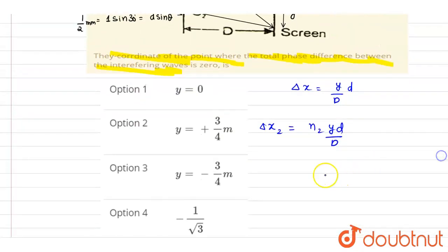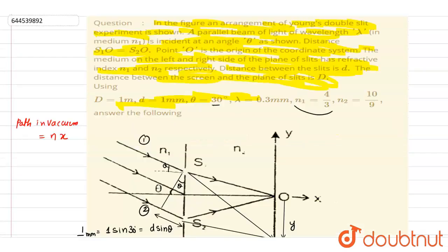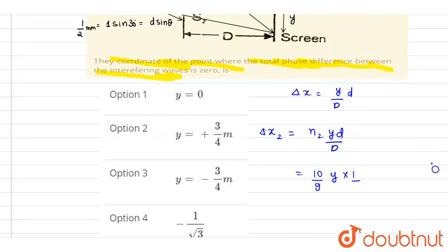10 by 9, y, small d is 1, capital D here is 1 meter.